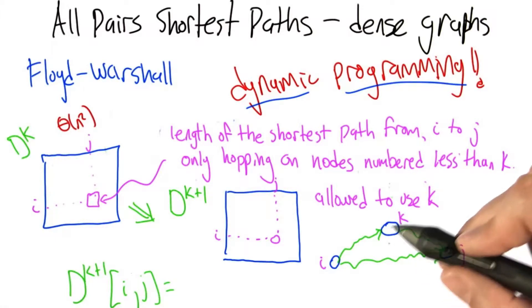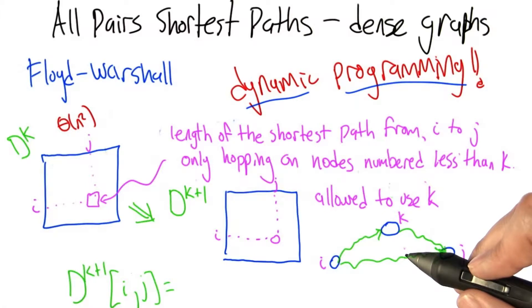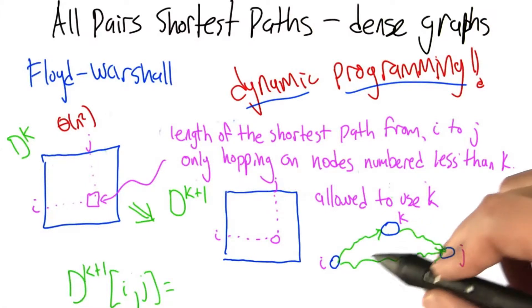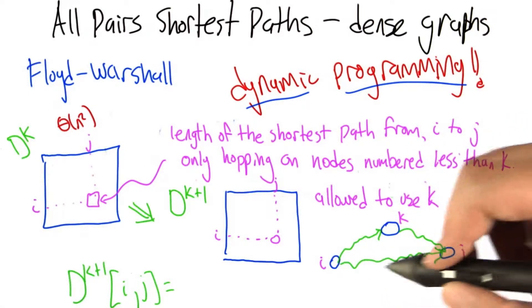When you think about it for a little bit, you'll see there's really only two possibilities. If we're trying to find the shortest path from i to j that is allowed to use k and any of the nodes with numbers smaller than k, there's two possibilities.